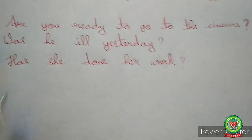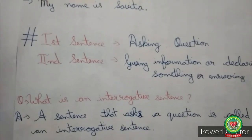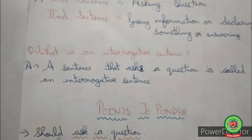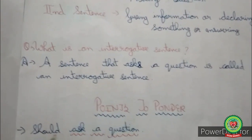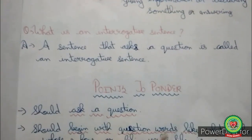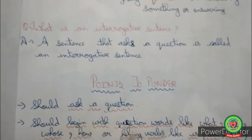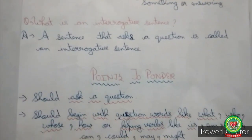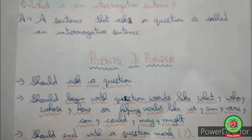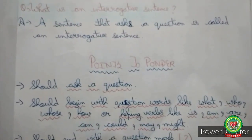But students, how will you recognize that a sentence is an interrogative sentence? An interrogative sentence should ask a question. It should begin with question words like what, who, whose, how, or helping verbs like is, am, are, can, could, may, might, and others. And it should always end with a question mark.